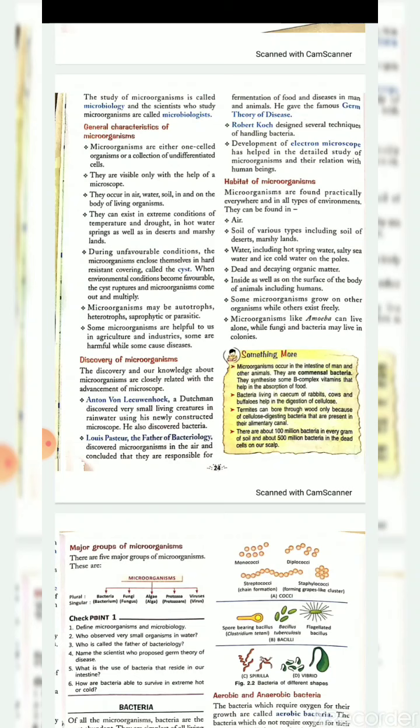Micro-organisms can exist in extreme conditions of temperature and drought — in hot water springs, as well as in deserts and marshy lands. During unfavorable conditions, the micro-organisms enclose themselves in a hard resistant covering called the cysts. When environmental conditions become favorable, the cyst ruptures and micro-organisms come out and multiply.